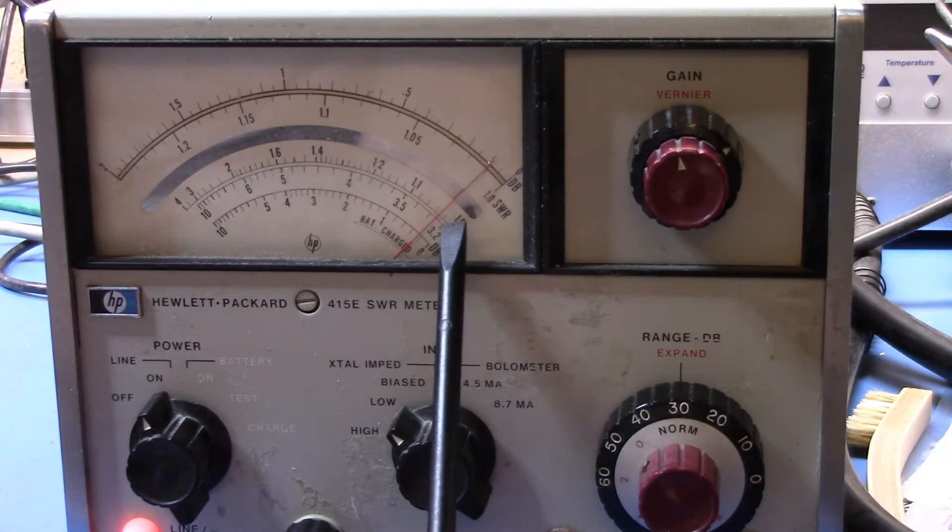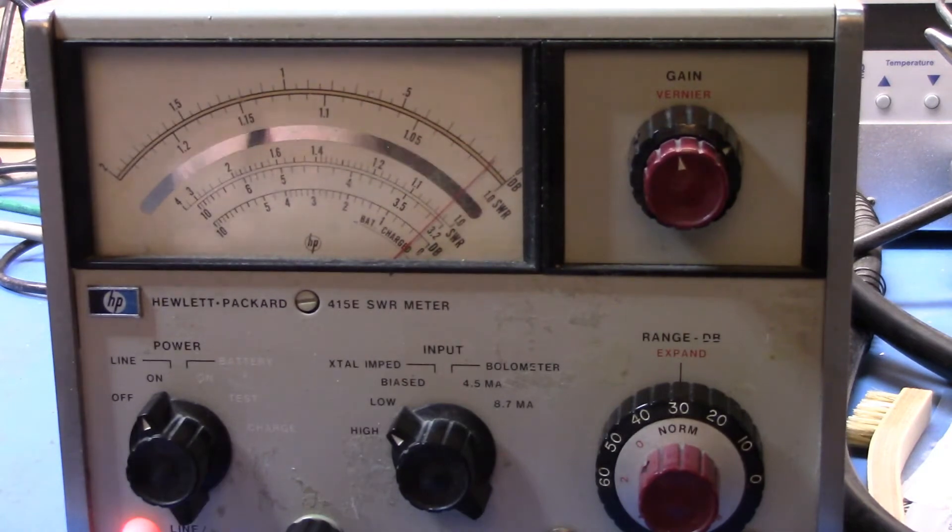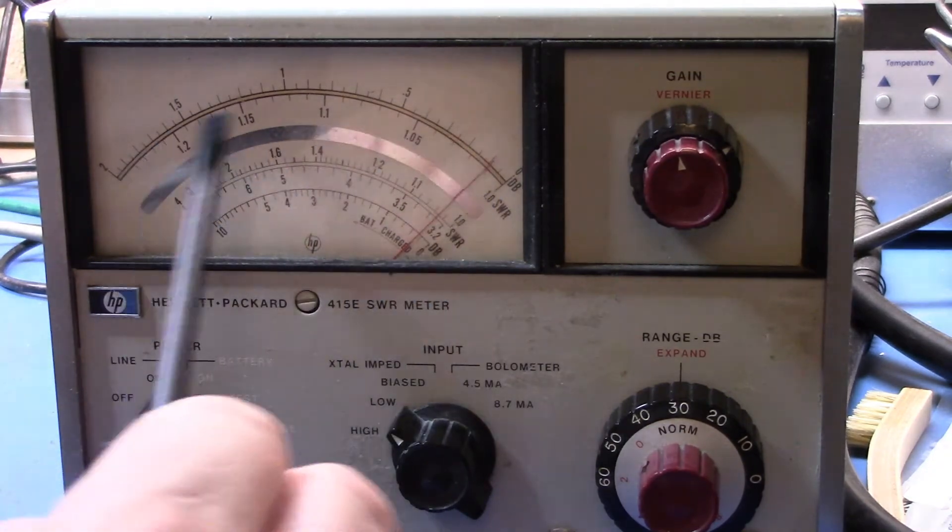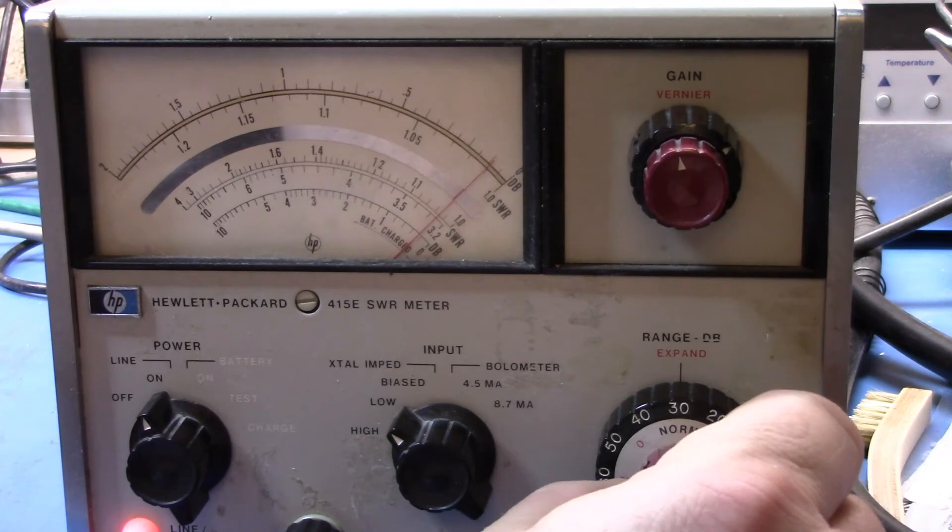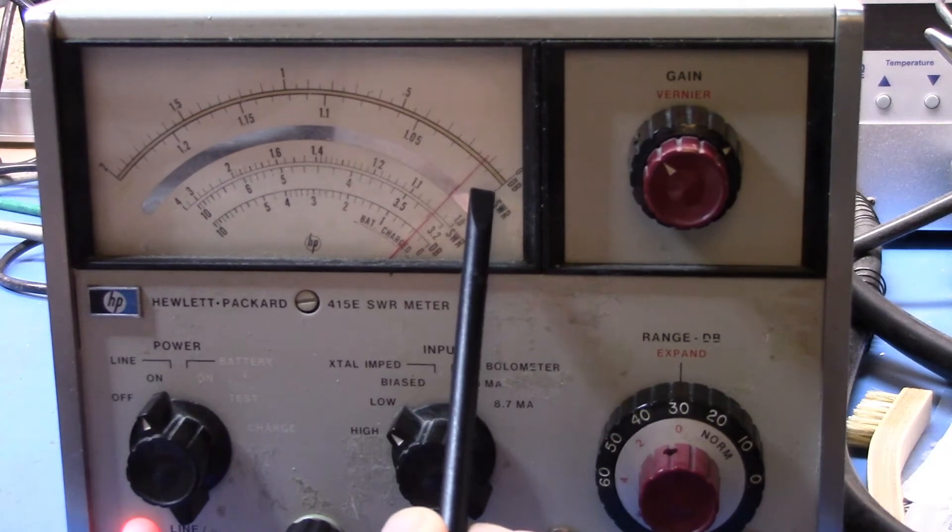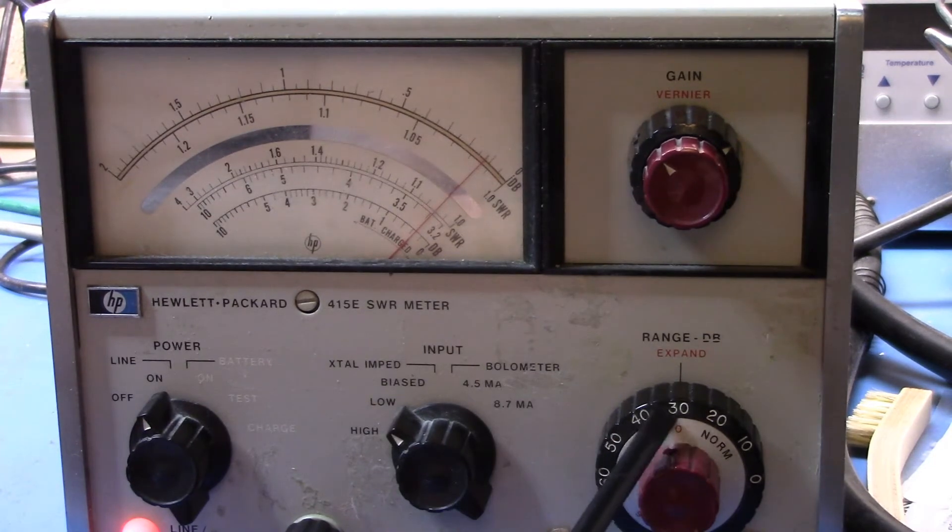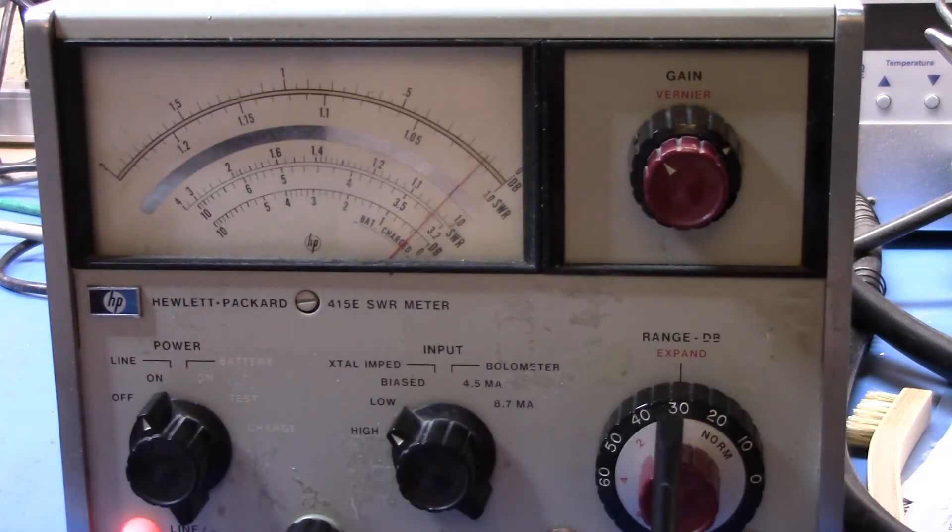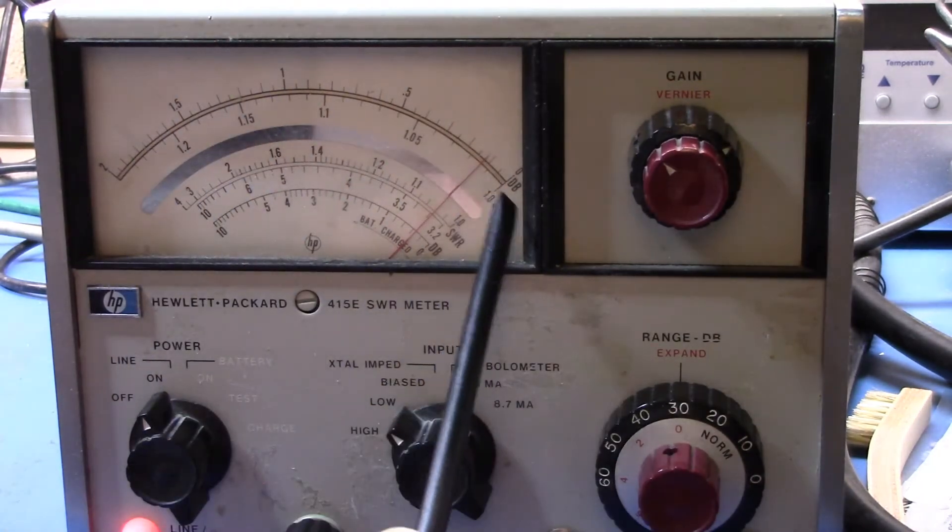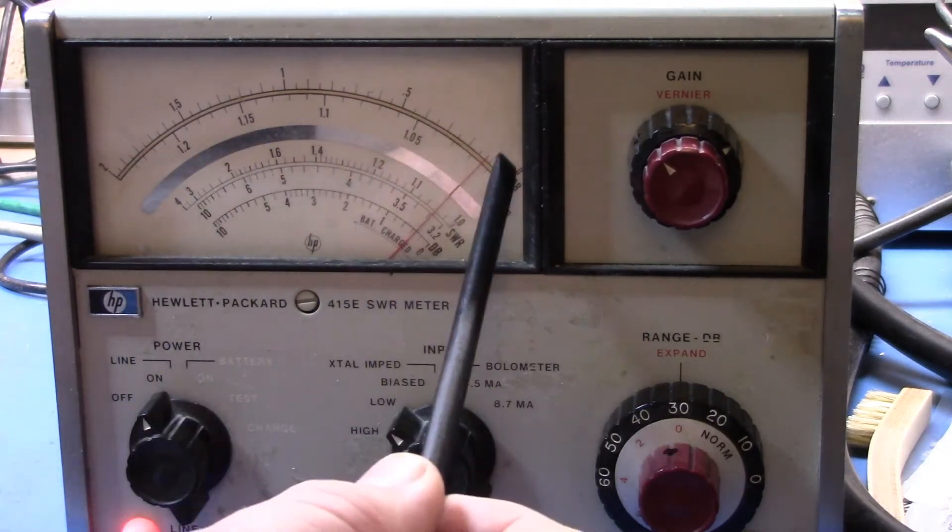Now I'm going to move the carriage until we get a minimum. It's about there. You're seeing that it's about 1.25 or so there. Now we want to get a little bit more in here. You can see that upper range there.